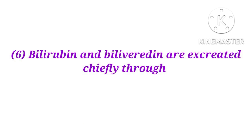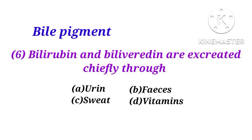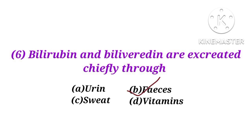Number 6. Bilirubin and biliverdin are excreted chiefly through urine, feces, sweat, or vitamins? Bilirubin and biliverdin are both bile pigments and are excreted chiefly through feces. So the answer is B.